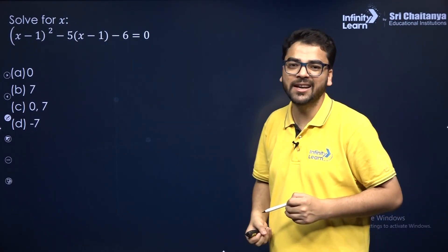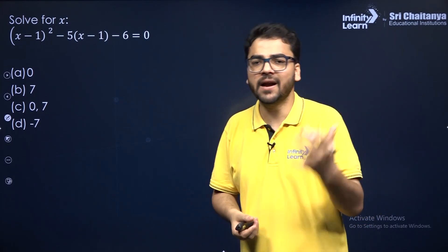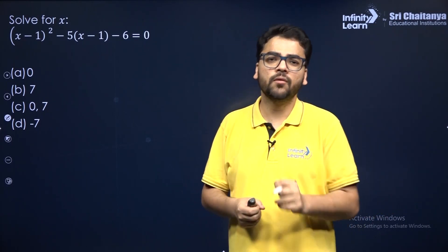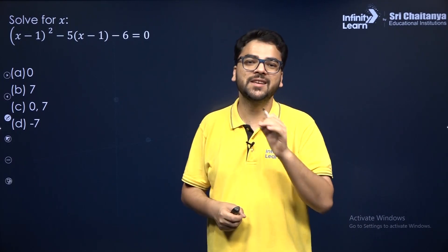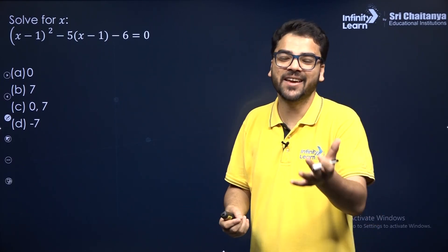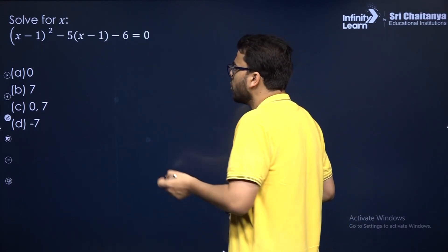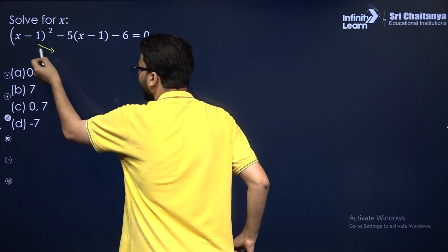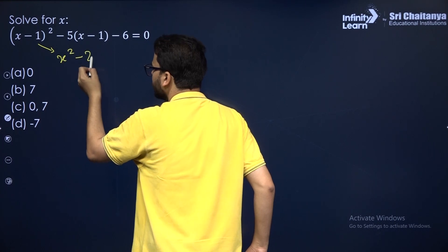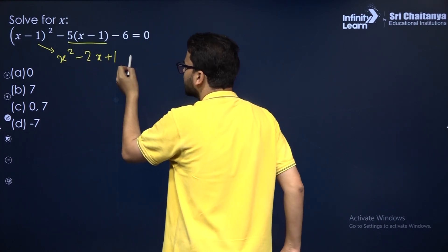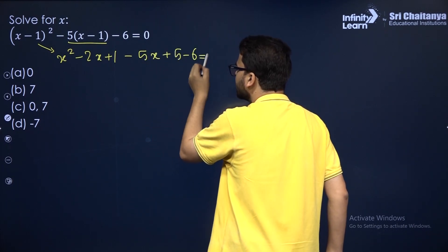Let's take the next question — solve this quadratic equation. You can use the quadratic formula or factorization; it's up to you. If you open the bracket using the (A − B)² formula, you can write X² − 2X + 1, then open the other bracket to get −5X + 5 − 6 = 0.